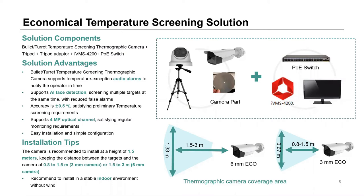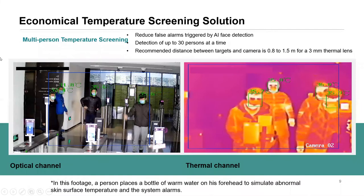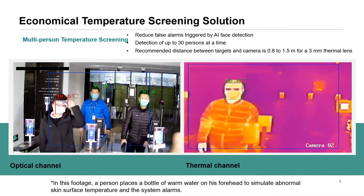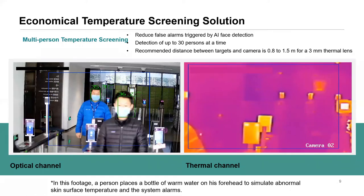The eco range also supports localised alarms. If an elevated temperature is detected, the camera's built-in supplement LED light will illuminate and an audible message will play from the built-in speaker — one of ten available choices. Very soon you'll also be able to customize and import your own audible message into the camera.